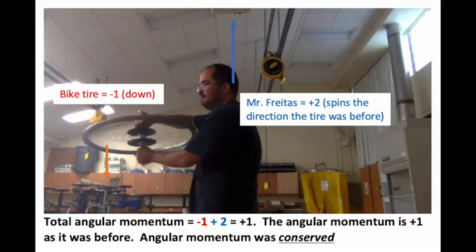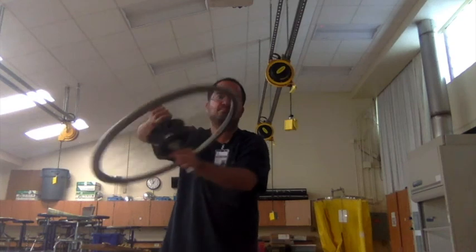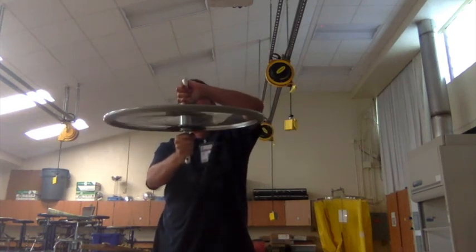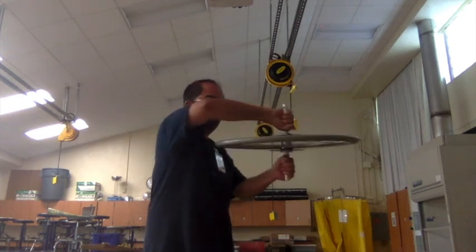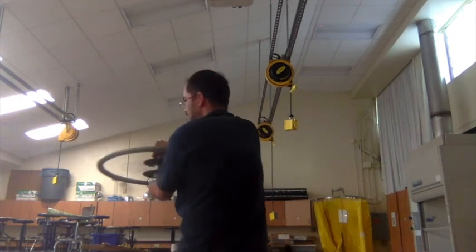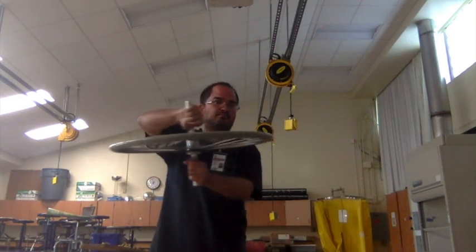But that's the same angular momentum we had before. The angular momentum before was plus one. The angular momentum is conserved. So it's because of the law of conservation of angular momentum that we see the bike tire transfer angular momentum to Mr. Freitas.